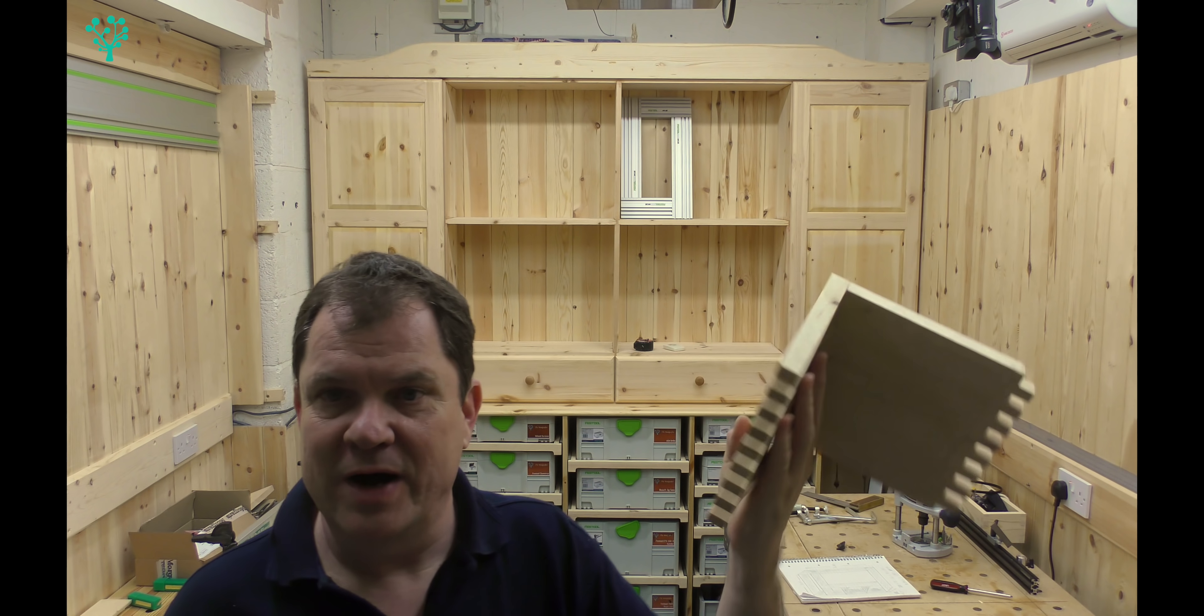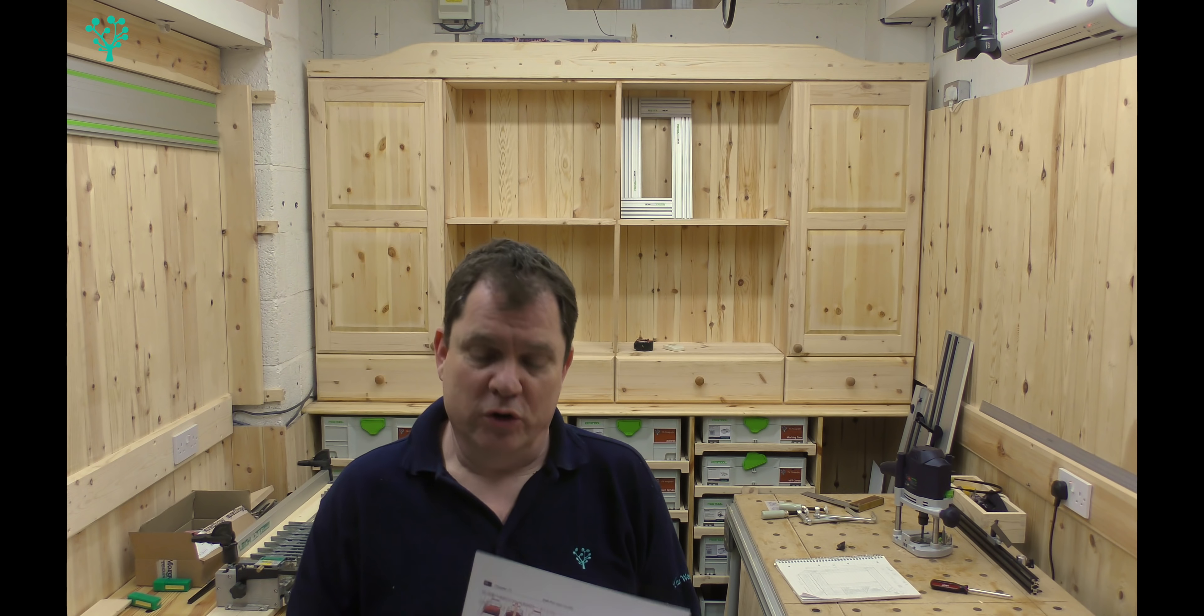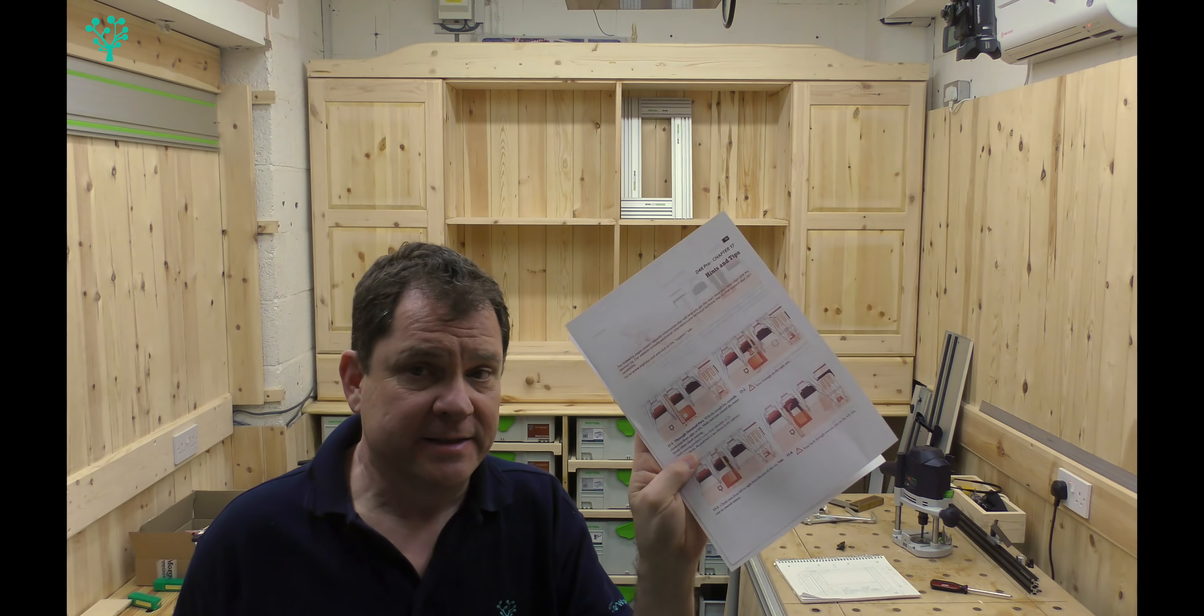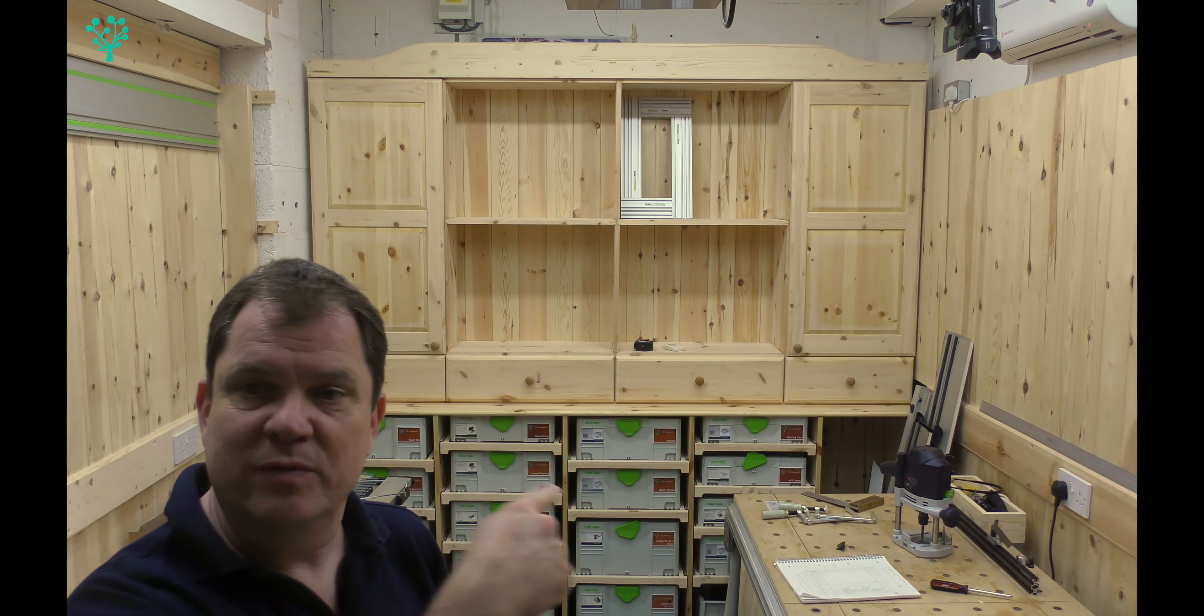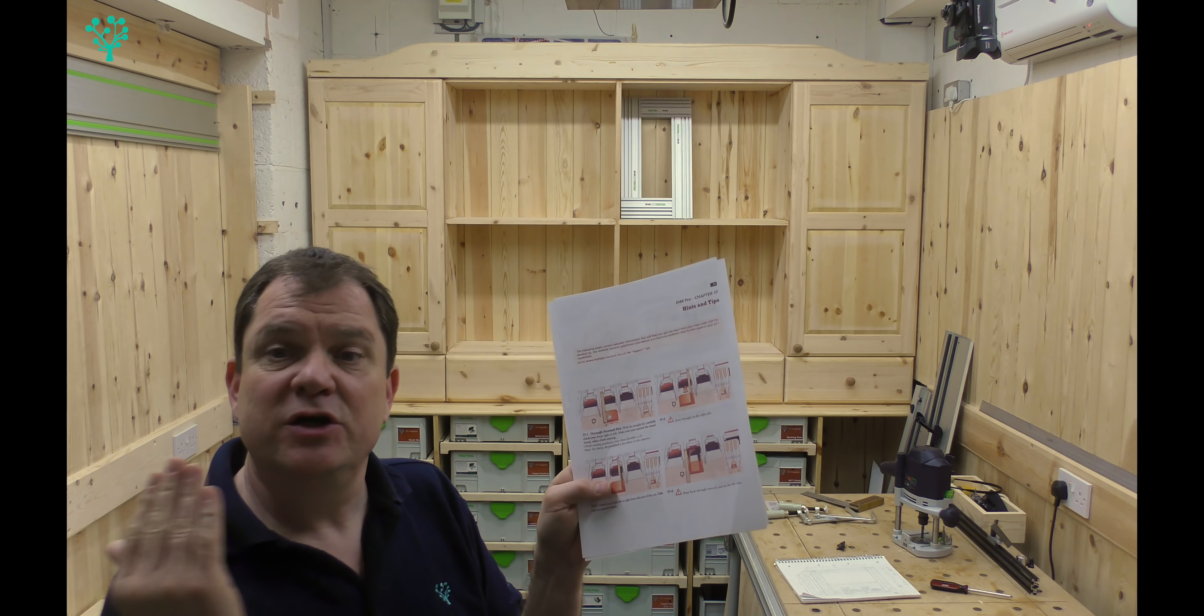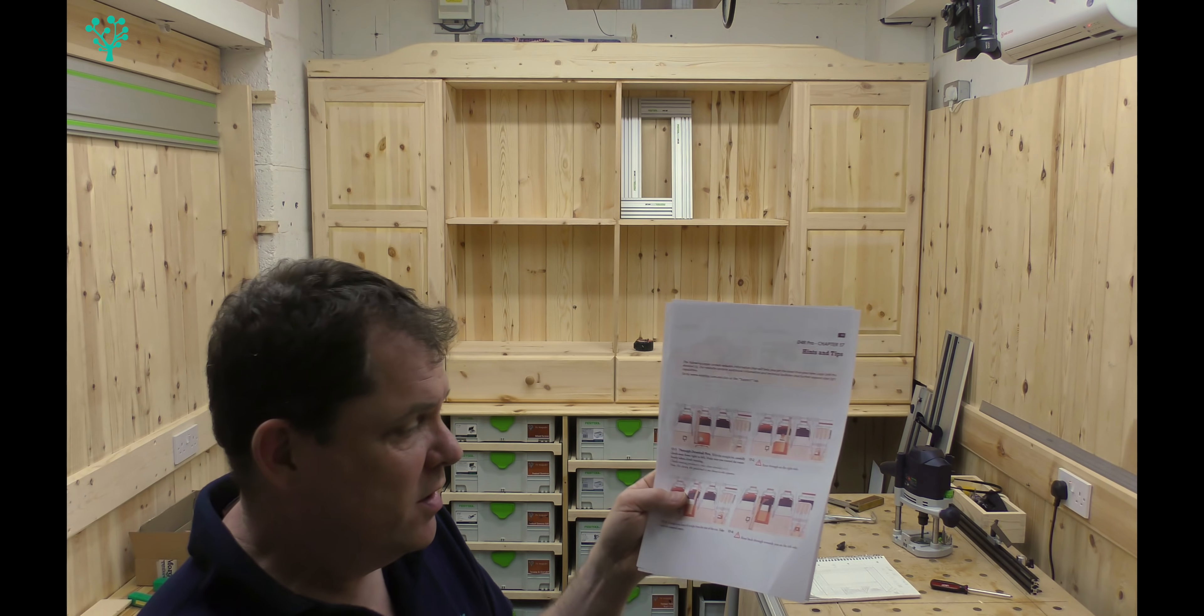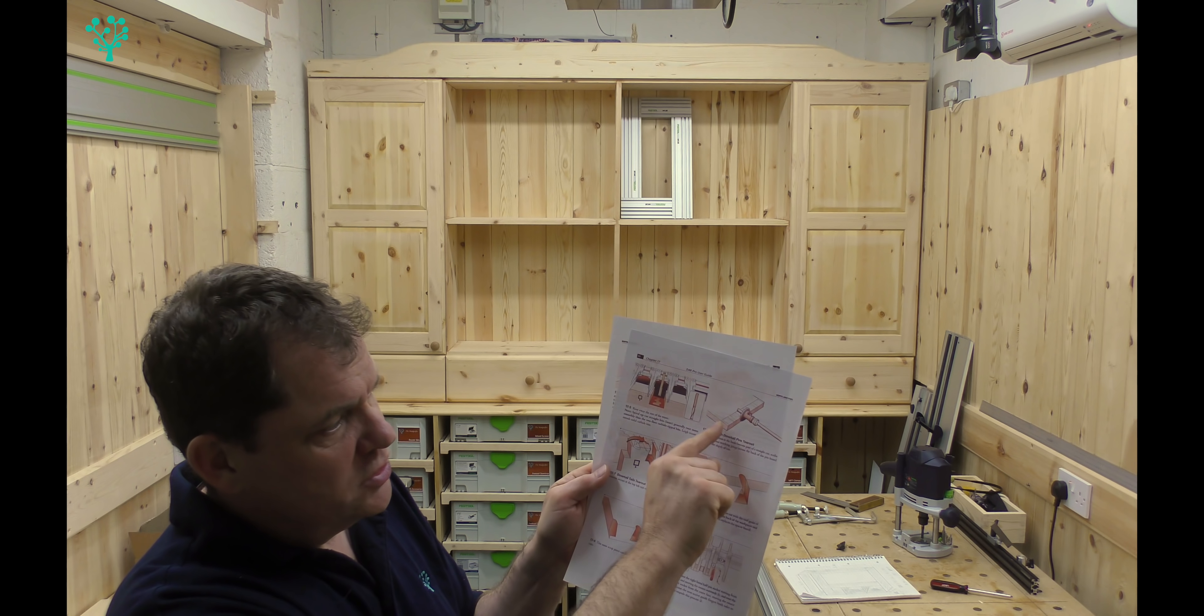In the back of the manual, chapter 17 starting on page 65, there is a hints and tips section. This talks about the problem of tear out. In here it's recommending a few solutions that we can apply to improve the quality of the joint. The first one is talking about climb routing. We've actually used climb routing. If you remember, we went down one finger, we came back, we moved over and routed down the next side of the finger. That in effect is climb routing, so we tried that technique and that did indeed reduce tear out.